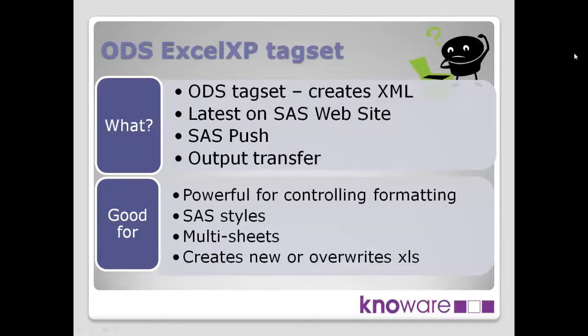This particular technique, the Excel XP tag set, is specifically created at SAS to write out a file format that is very good to be used within Excel — that's why it's called Excel XP. It actually creates XML. You may think it should be creating an XLS formatted file, but no, it's actually creating XML. Excel knows how to deal with XML, and when you open up the file, it displays the information in the appropriate way for you.